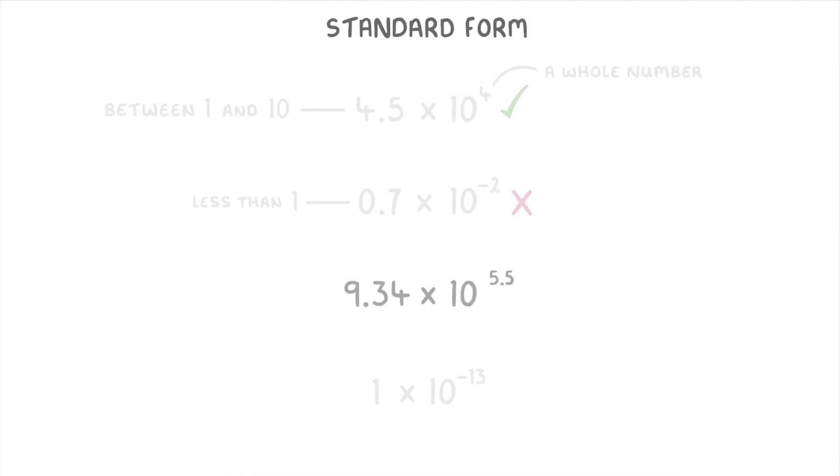9.34 × 10^5.5 also isn't correct standard form. The front number of 9.34 is fine because it's between 1 and 10, but the power isn't a whole number, so it doesn't count as standard form.